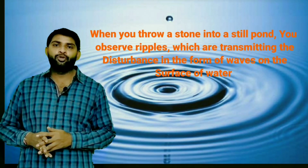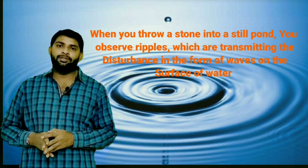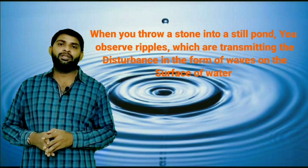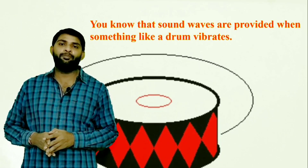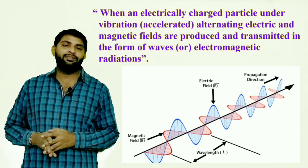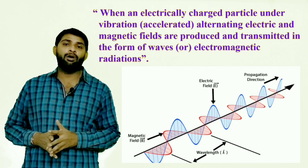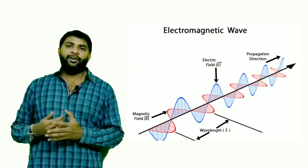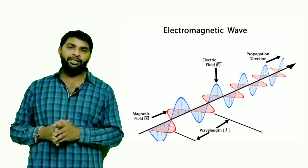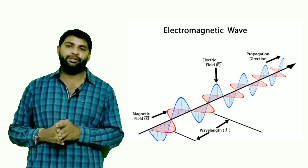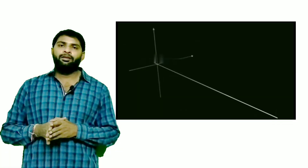Electromagnetic waves: when you throw a stone into a still pond, you observe ripples transmitting a disturbance in the form of waves on the surface of water. Sound waves are produced when something like a drum vibrates. Similarly, when an electrically charged particle is accelerated, alternating electric and magnetic fields are produced and transmitted in the form of waves — these are called electromagnetic radiations.